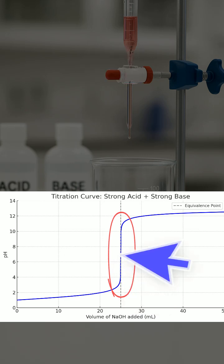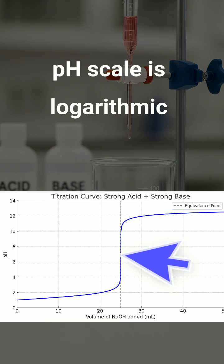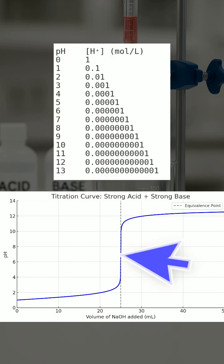You must understand why there is a sharp rise. It's because the pH scale is logarithmic. That means every one-unit change in pH reflects a tenfold change in the concentration of H+ ions.